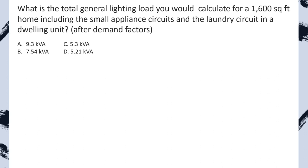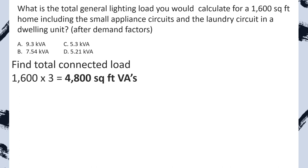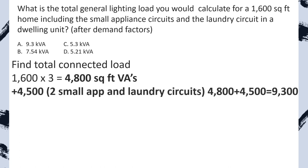In this question, I went ahead and stated that there are two small appliance and one laundry circuits in the dwelling unit. From now on, I'm not going to state it anymore for the questions, because on your examination they're not going to state it either. You just have to know anytime you're calculating the total general lighting or doing a whole home load calculation, you have to include the two small appliance and one laundry circuit, which equals 4,500 VAs. Step one, find the total connected load: 1,600 square feet multiplied by three VAs per square foot gives us 4,800 VAs. Now we tack on our 4,500 for the two small appliance and one laundry circuits, giving us a total of 9,300.